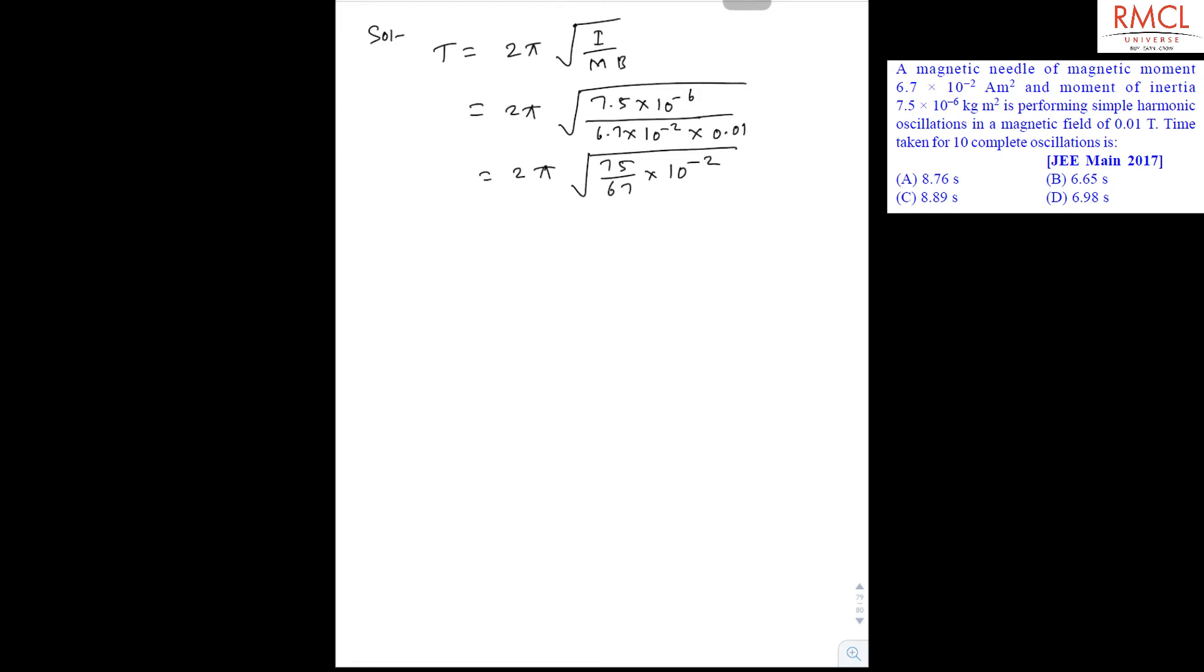Now if we solve this we can get 0.665 seconds. So we have to find time taken for 10 complete oscillations. So it will become T equals 0.665 × 10, which is 6.65 seconds. So the correct option is D.